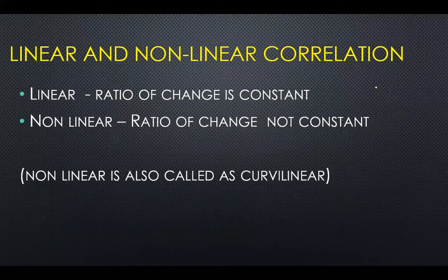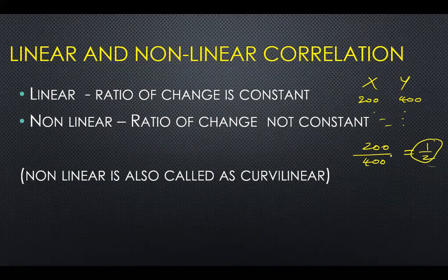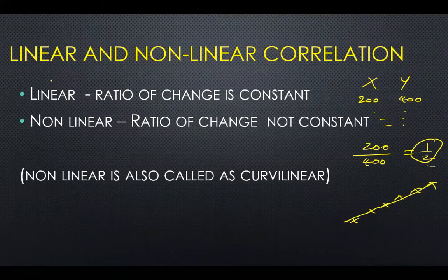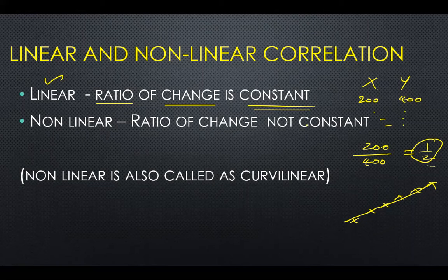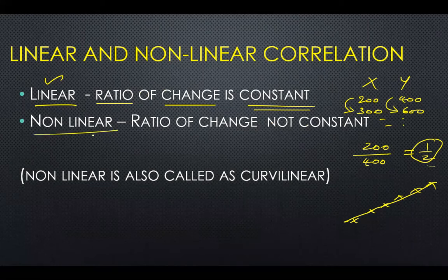Linear correlation means the ratio of change is constant. For example, if x is 200 and y is 400, the ratio is 1:2. If all the values maintain this constant ratio and you plot them on a graph, you get a straight line — that's linear correlation. Non-linear means the ratio of change is not constant.